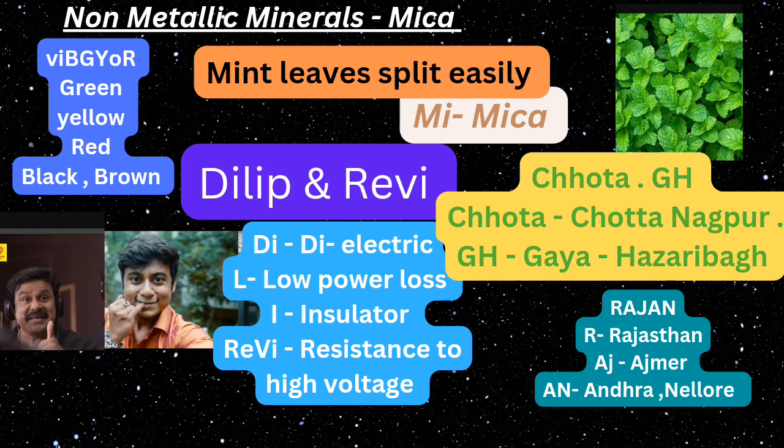The third mnemonic is 'Dilipan Ravi' — both are actors, and you can relate this with an image. 'Di' stands for dielectric, 'L' for low power loss, 'I' for insulator, and 'Ravi' stands for resistance to high voltage. These are the key properties of mica: dielectric, low power loss, insulator, and resistance to high voltage.